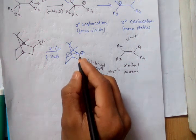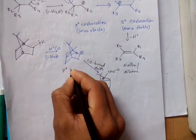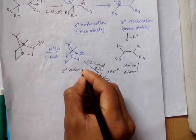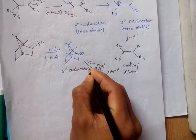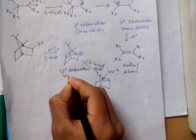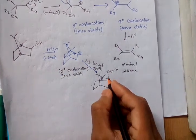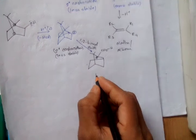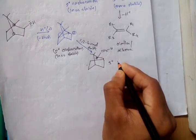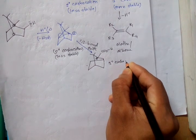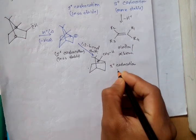So actually this is 2 degree carbocation. That is less stable. And this is 3 degree carbocation. That is more stable.